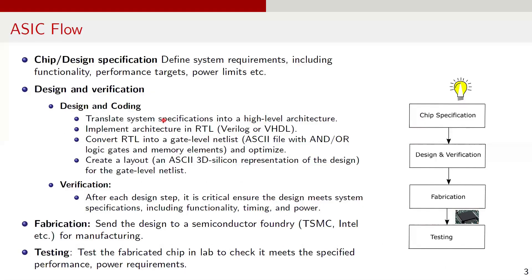Now, let's look at the different steps in ESIC design flow. In ESIC design flow, a custom IC is developed for a specific task. Here is a high-level overview of the ESIC design process. The very first step in ESIC design is ideation and specification development for an IC intended for a particular application. This process includes defining system requirements, including functionality, performance targets, power limits, and constraints.